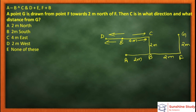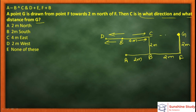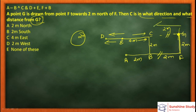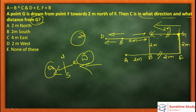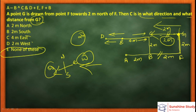Last question: point G is drawn 2 meters North of F. Then C is in what direction and at what distance from G? Since this distance is 2 meters, the answer is 2 meters. With respect to G — C is to the East side, meaning 2 meters East. But since '2 meters East' is not given in the options, the answer is 'None of these'.